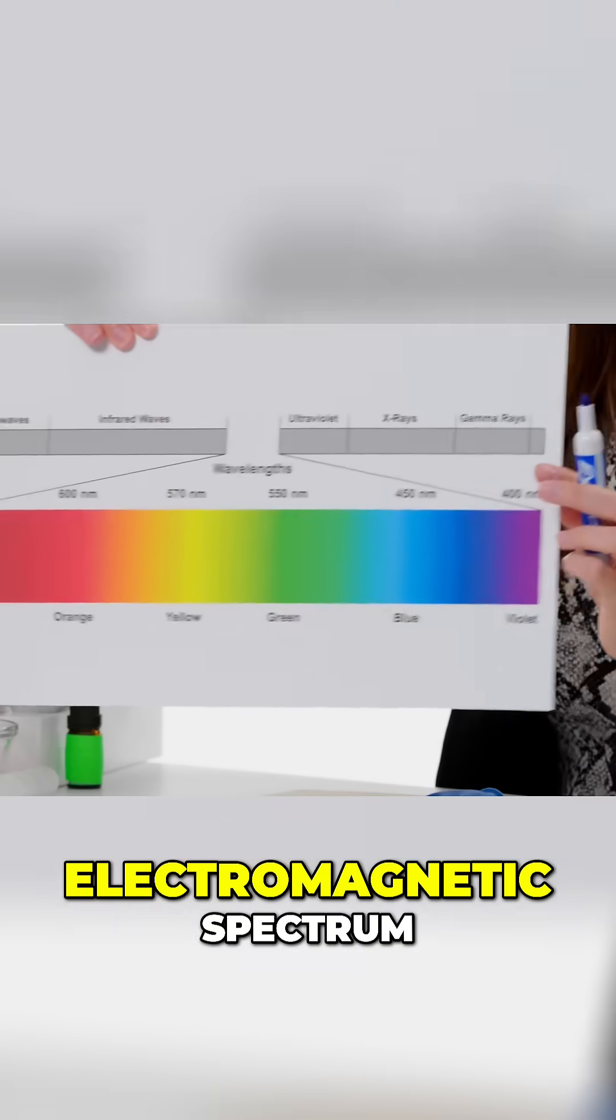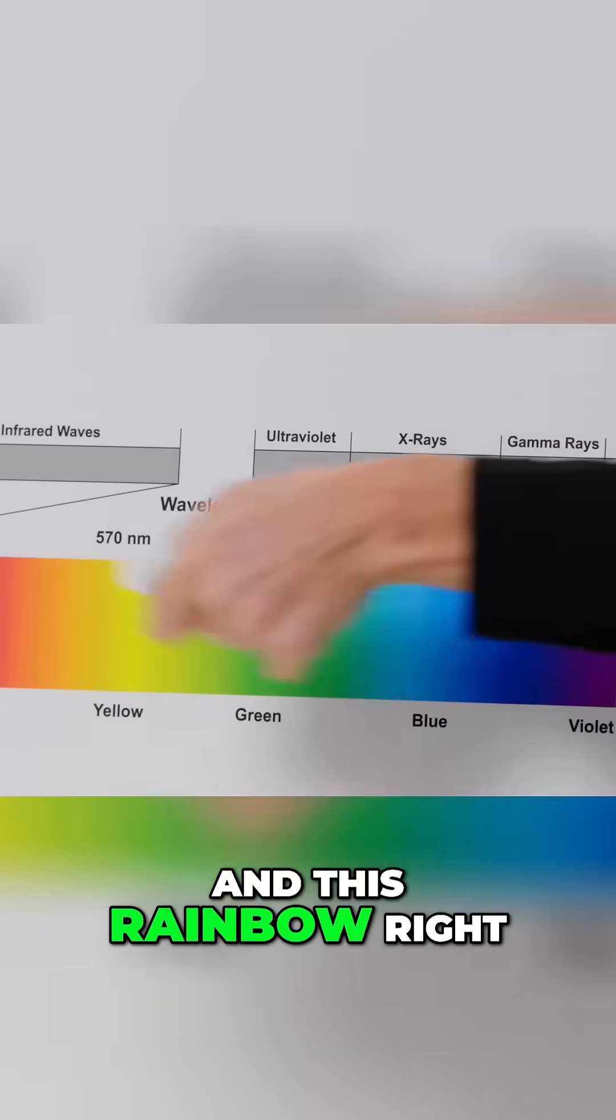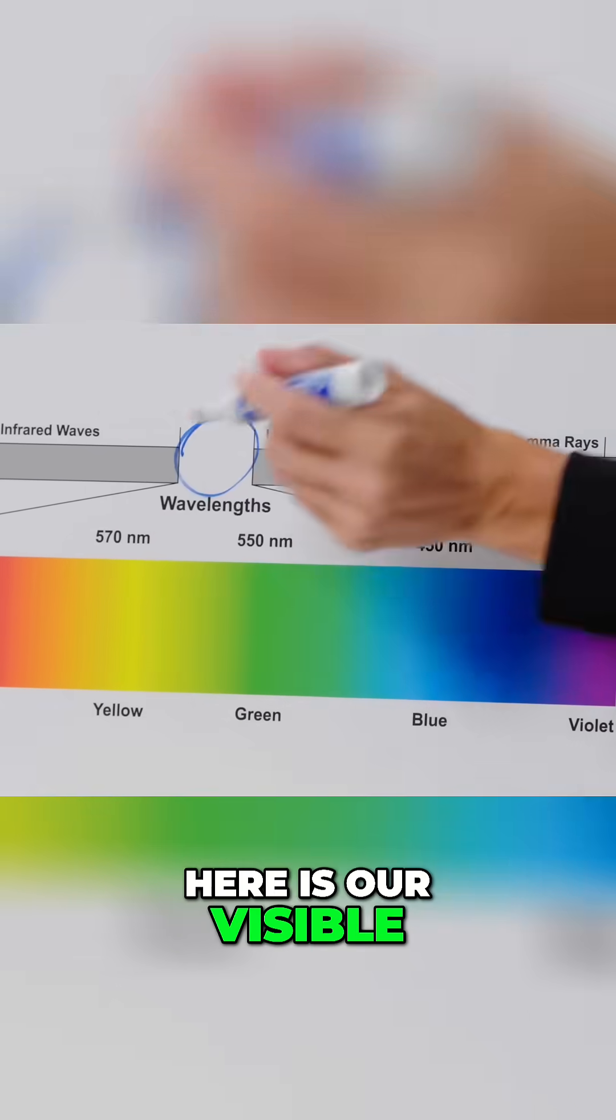Here we have the electromagnetic spectrum. Things on this end are very high energy and this rainbow right here is our visible light spectrum.